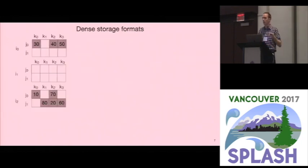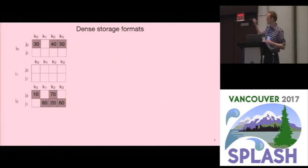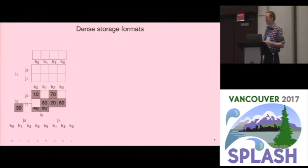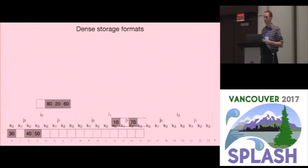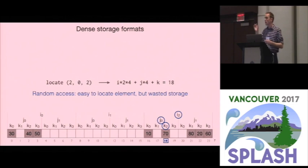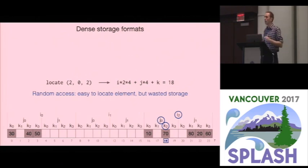Now let's get a feel for how sparse formats work. This is a three-tensor laid out as matrix slices. If I want to store it as a dense tensor, I just lay it out continuously in memory. To find any location, I compute a strided formula and get fast random access. When you compute with this, you typically stream through the whole tensor, and this random access gives us a lot of flexibility.